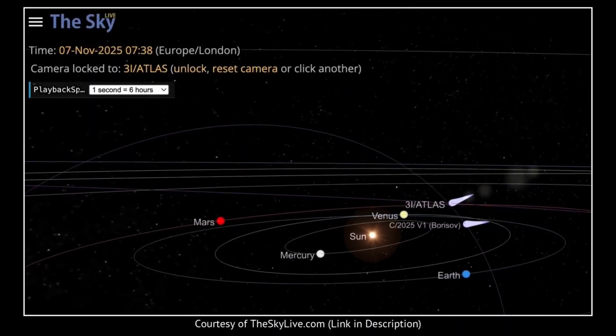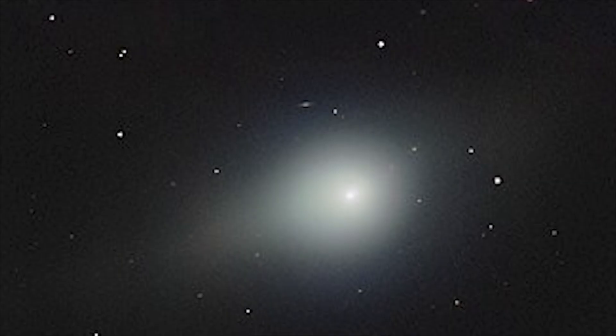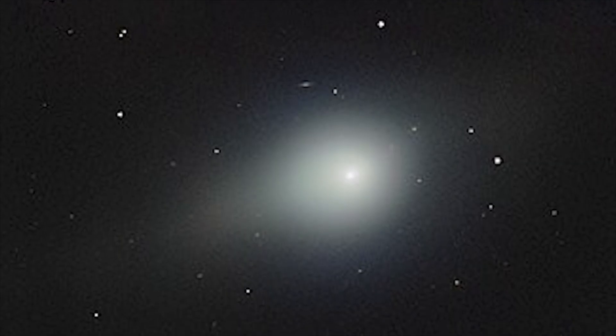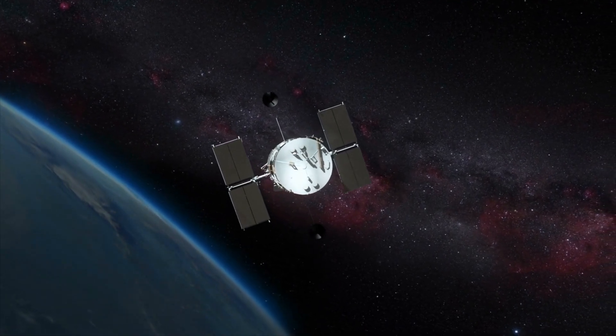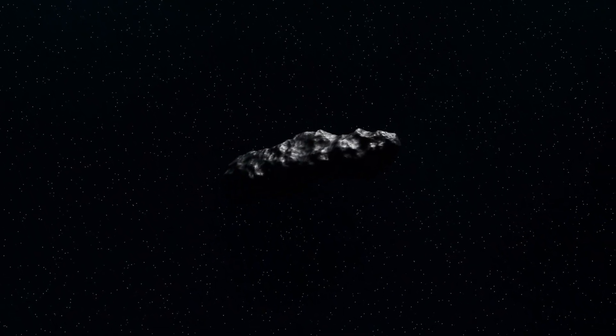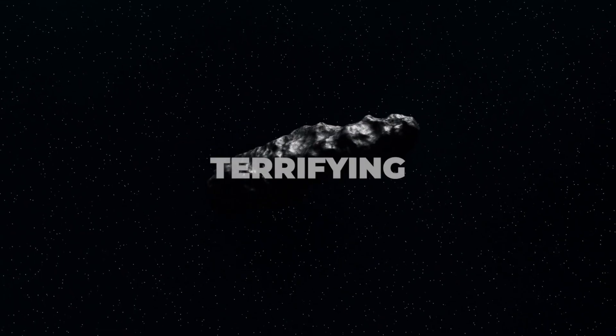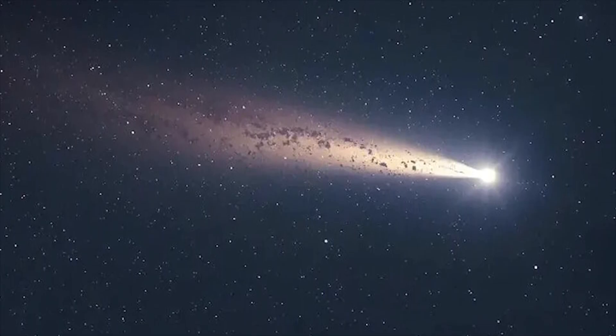We are being told to look away. The official story says 2I/Borisov is a closed chapter—a fading comet drifting harmlessly into the dark. But the data coming from the Hubble Space Telescope tells a very different story: a story that is inconvenient, unsettling, and potentially terrifying. While the world stops watching, 2I/Borisov is not fading. It is building a shield.